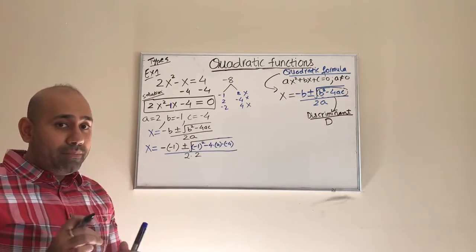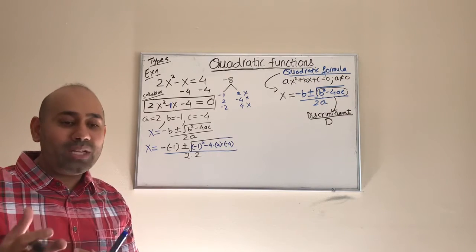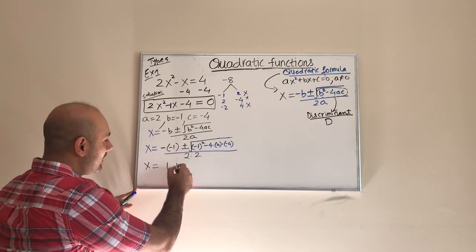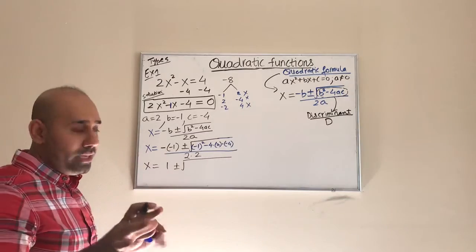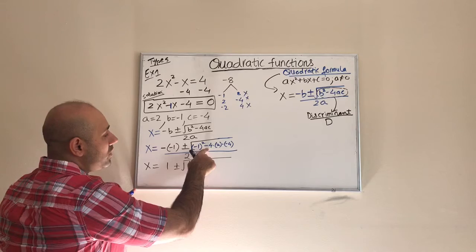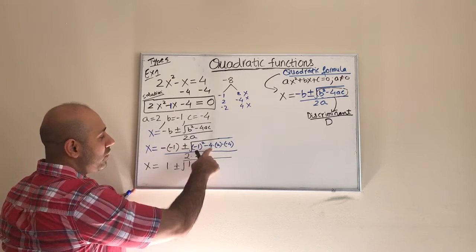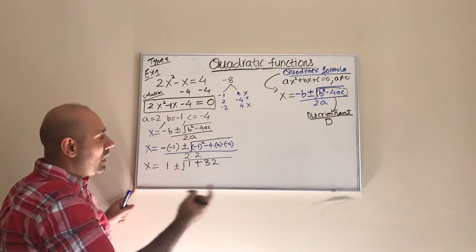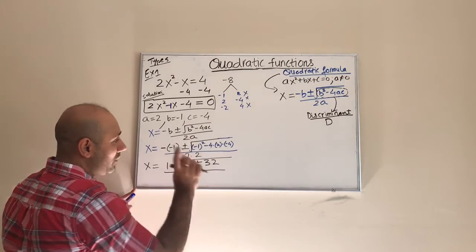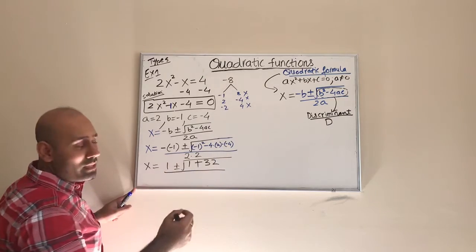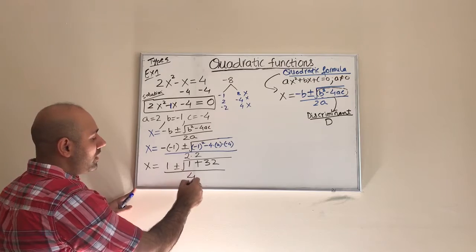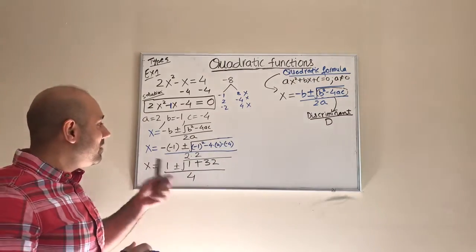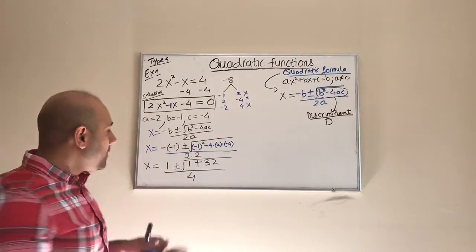Before using a calculator, simplify as much as possible. Negative times negative is positive, so I get positive 1. Then negative 1 squared is positive 1; negative 4 times 2 times negative 4 — the two negatives make a positive — gives 4 times 2 times 4, which is 32. So under the radical I have 1 plus 32. The denominator is 2 times 2 which is 4. For something this simple, try to do it without a calculator.